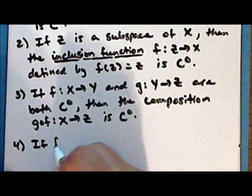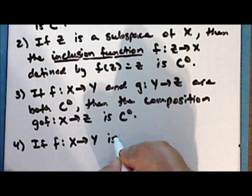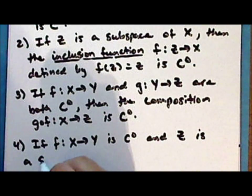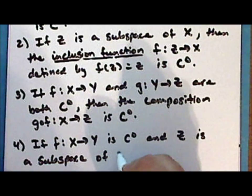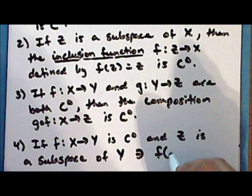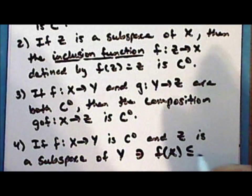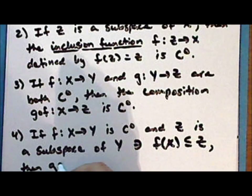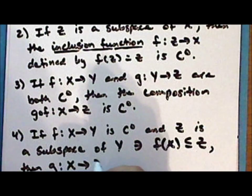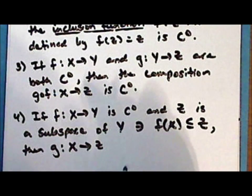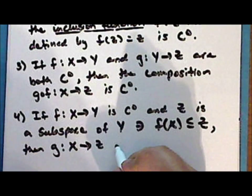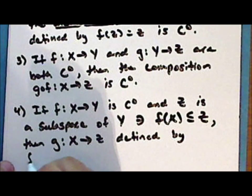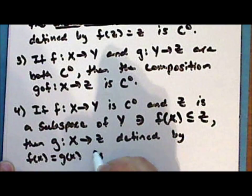If the function F from X into Y is continuous, and Z is a subspace of the space Y such that the entire range of the function F is contained in the subspace Z, then the function G, which maps X into Z — here notice that we are restricting the codomain of the function F — defined by F(x) equals G(x), is continuous.